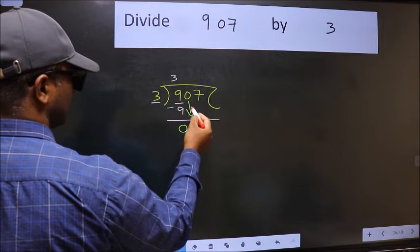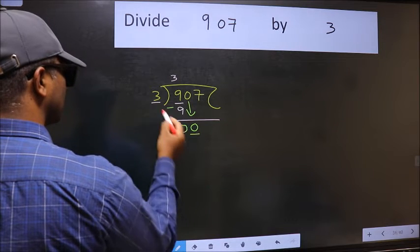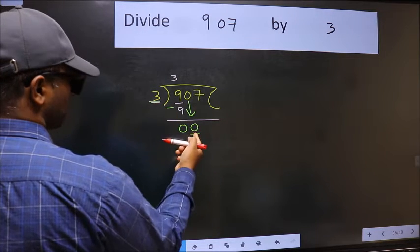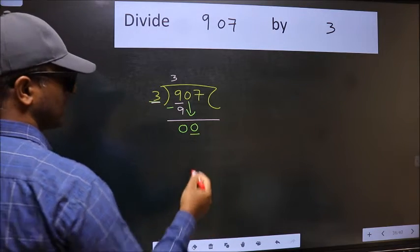After this, bring down the next number. So 0 down. Now here we have 0 and here 3. 0 is smaller than 3, so we should bring down the second number.